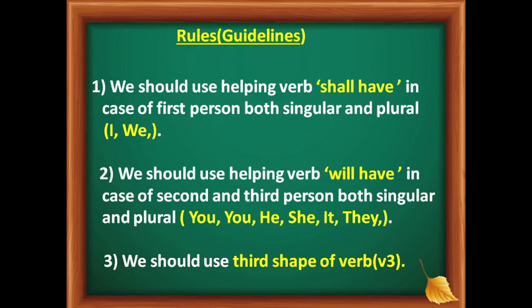Third guideline: we should use the third form of the verb, that is V3. Atmi vidhyayarthikale — I, we — shall have enwa sahayika kriyapadavan balasbeku. Yerane rule — you, he, she, it, they — will have enwa sahayika kriyapadavan balasbeku. Moor neethaagi, illi kriyapadada mooraneya rupavan balasbeku. So here are the three guidelines to construct sentences.